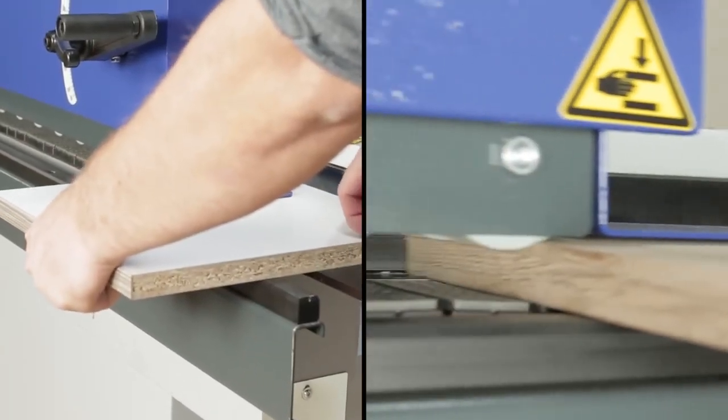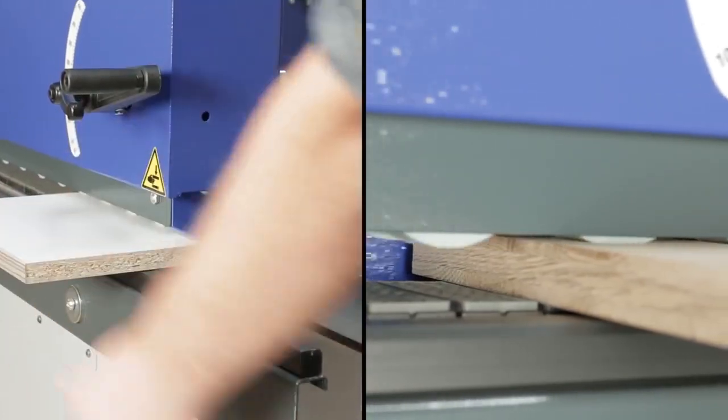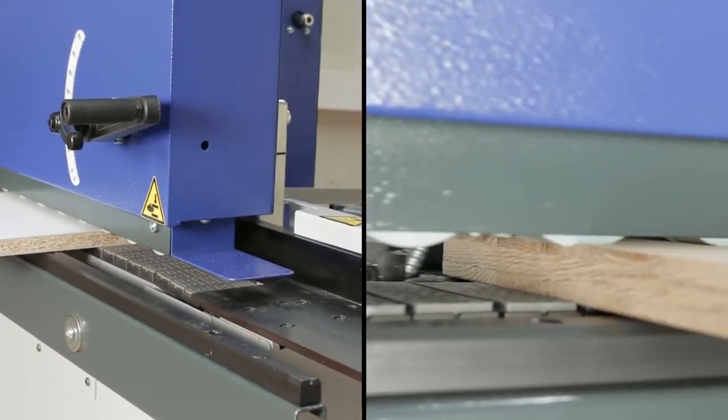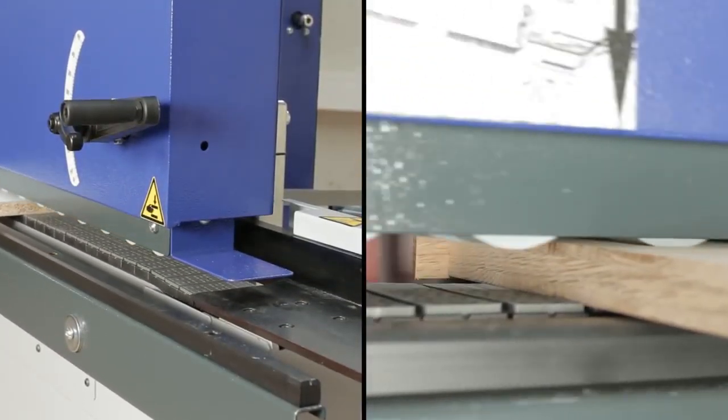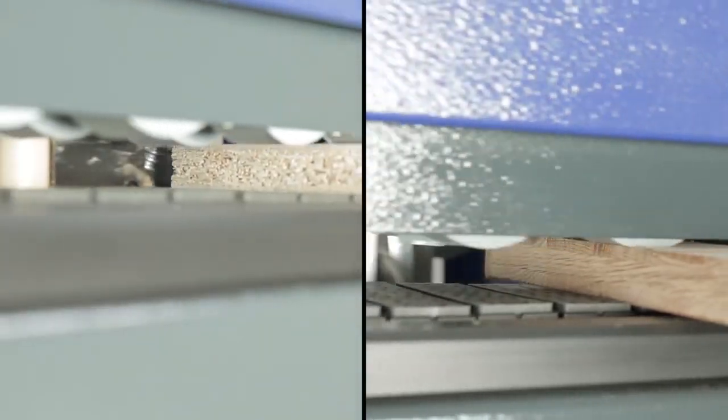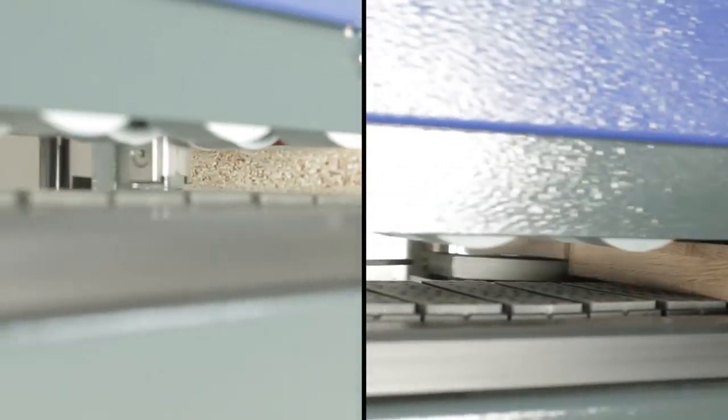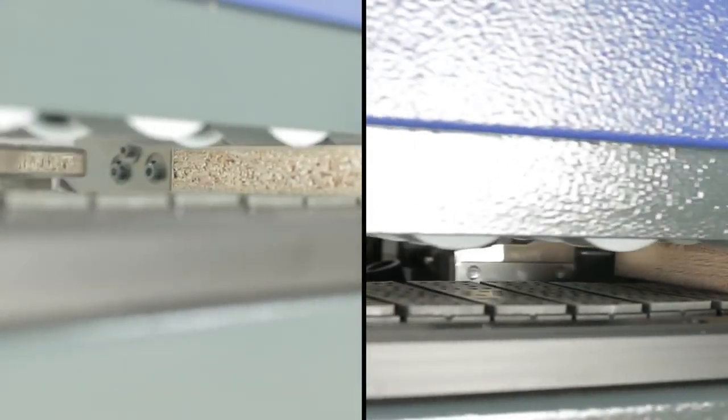The G330 is the entry-level model of the Felder edge banders with chain feed. The G330 combines cutting-edge technology and optimized workflows for increased productivity.